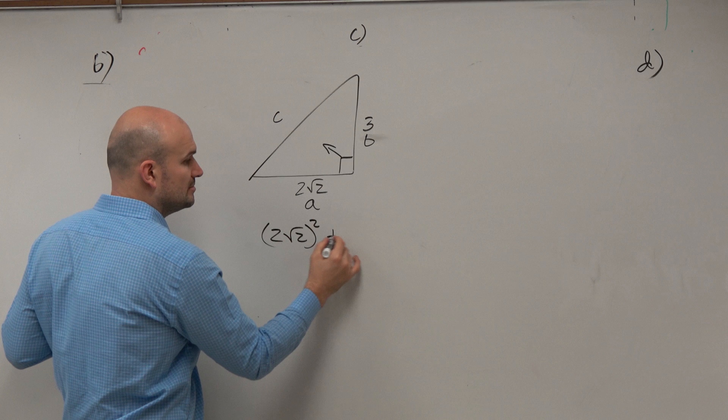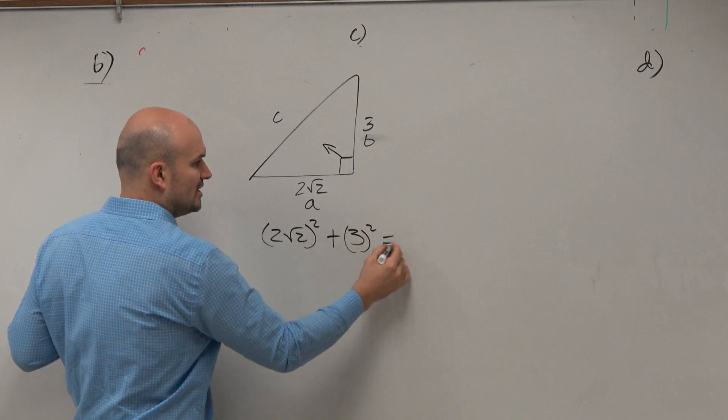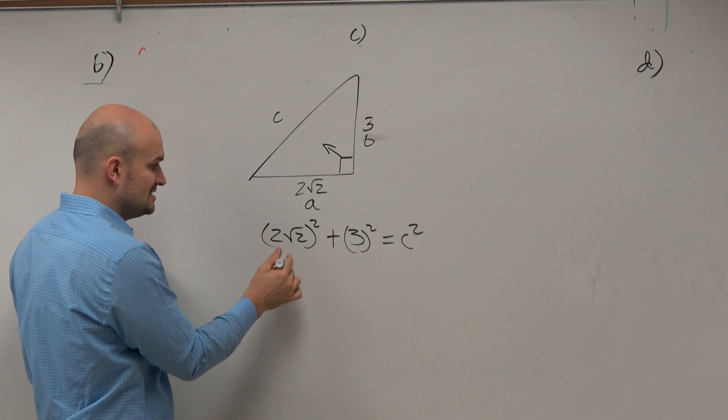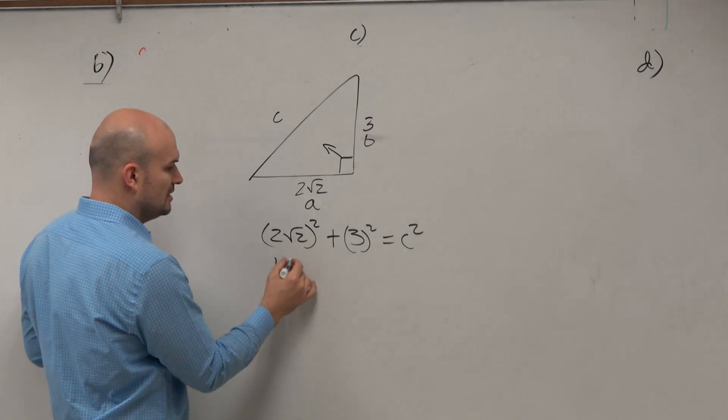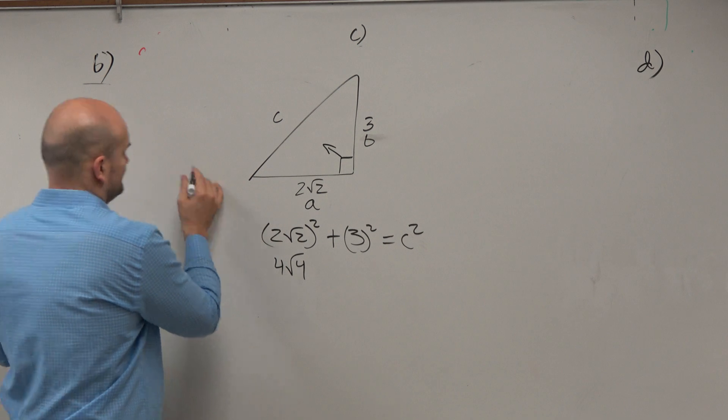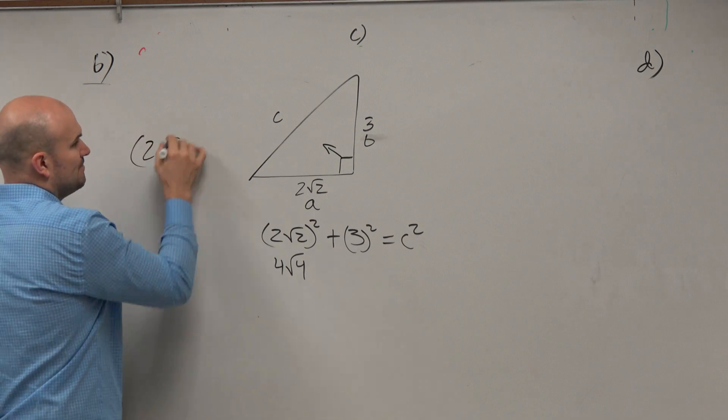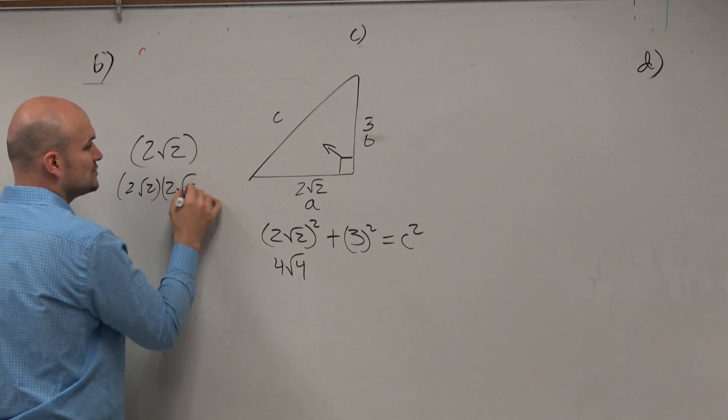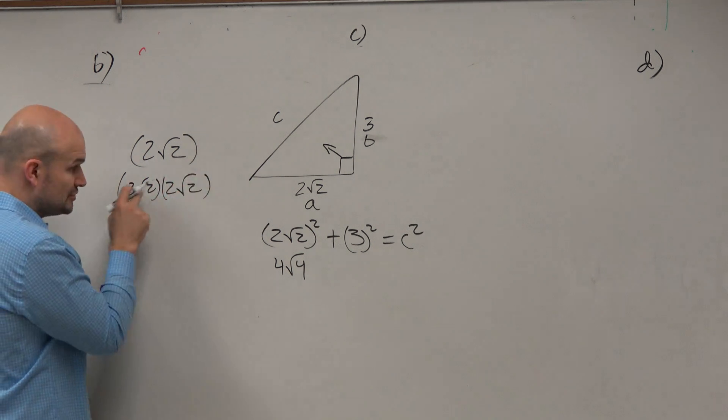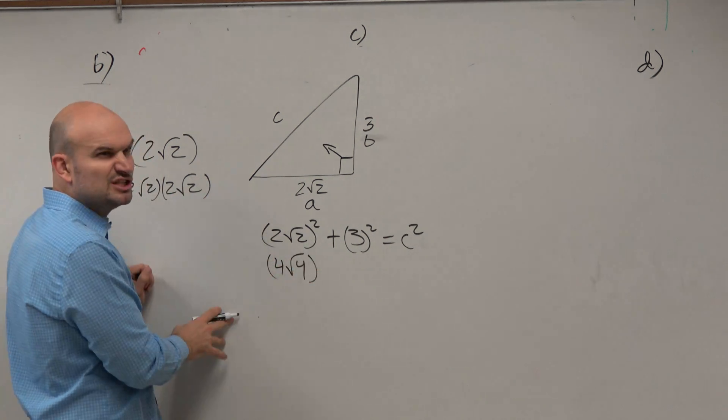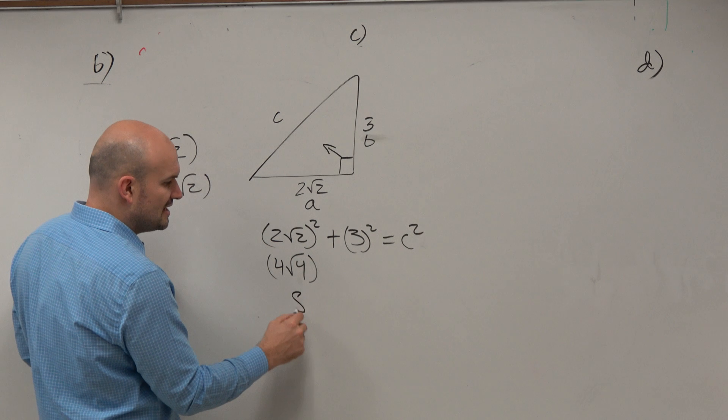So 2 squared of 2 squared plus 3 squared equals c squared. Remember, 2 squared of 2 is technically going to be 4 times the square root of 4, right? 2 times 2 is 4. Because remember what we did in polynomials? This is 2 squared of 2 times 2 squared of 2. So you're doing 2 times 2, which is 4. Square root of 2 times square root of 2 is the square root of 4, which is really just 2. 2 times 4 is 8.